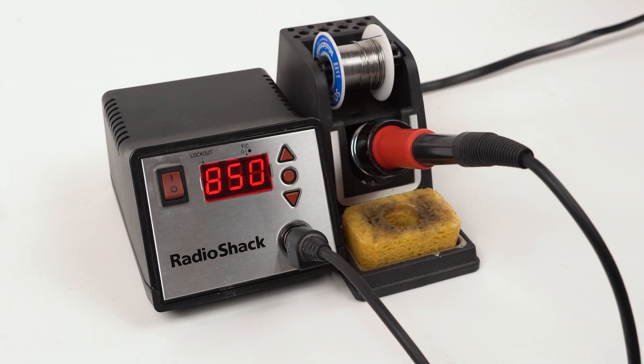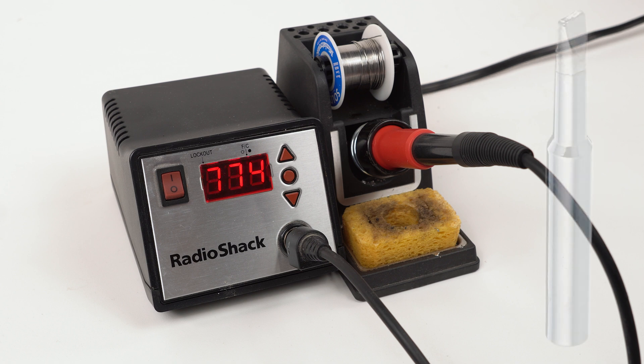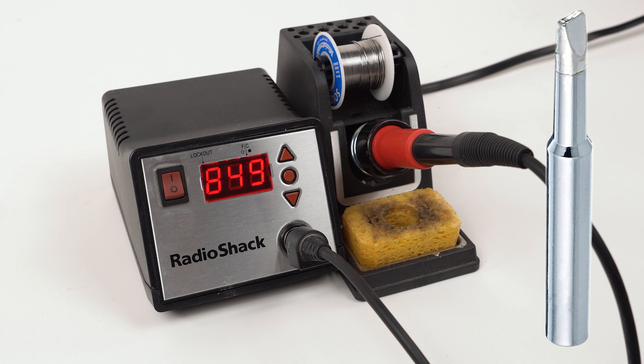Start by preheating your soldering iron to 850 degrees Fahrenheit or 455 degrees Celsius. Now's the time to mention you should be using a wide tip, 3/16th of an inch or 5 millimeters.